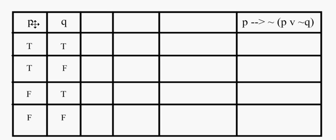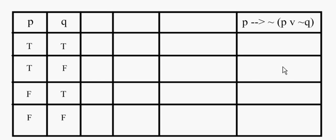To begin with, we first want to list out the possible combinations of p and q, and there are four possible combinations. Any time that you just have two simple statements, such as p and q, you will always have these same four possible combinations of truth values. We have the situation in which both p and q are true, then p is true but q is false, then p is false and q is true, and finally what if p and q are both false.